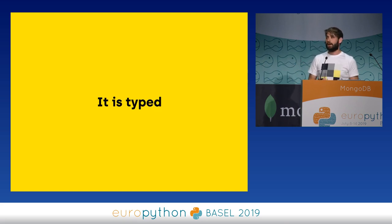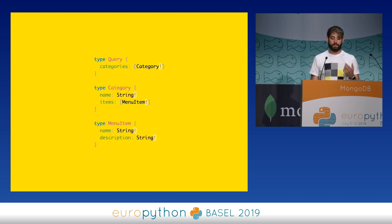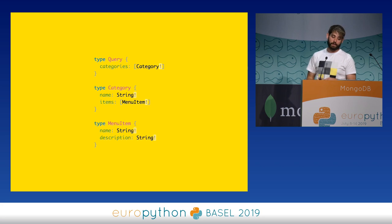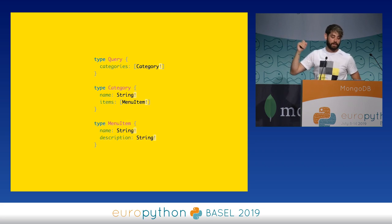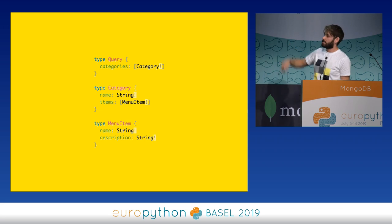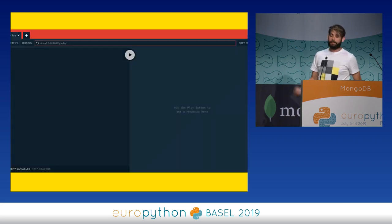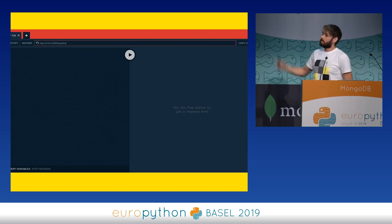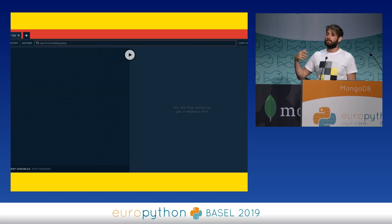GraphQL also has a type system. Every GraphQL API has a schema, and the schema defines the types and all the fields for each type. For example, we have a root type called Query — all fields come from the root query. We have a categories field which is a list of categories. Then we have a Category type with a name and a list of menu items, and MenuItem has only a name and a description. Having all this together allows us to use tools to easily get documentation and do testing.